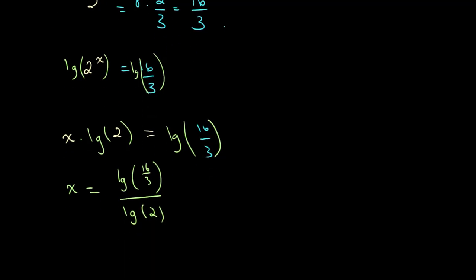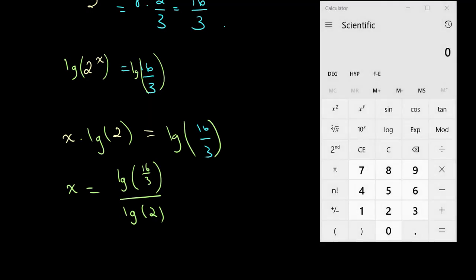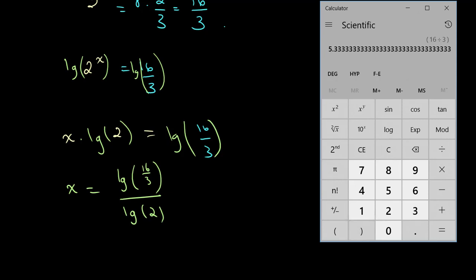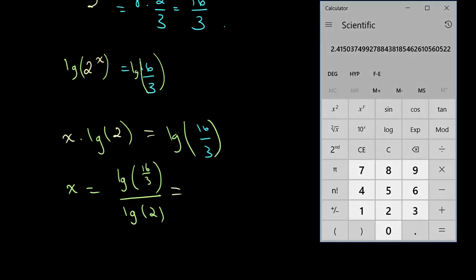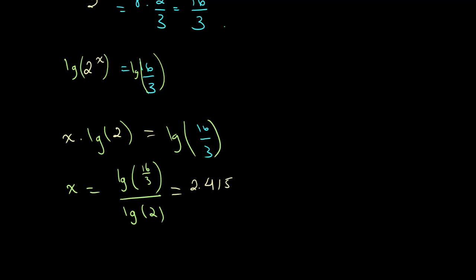We can plug this into our calculator. We have 16 divided by 3. The logarithm of this divided by the logarithm of 2. This is equal to 2.415. We round to two significant figures so we get this is equal to 2.42.